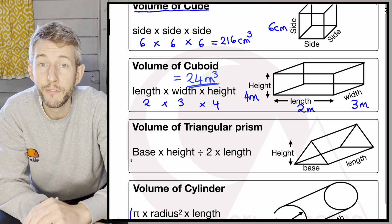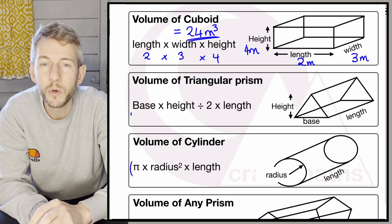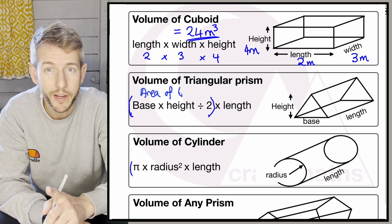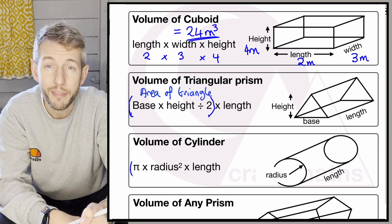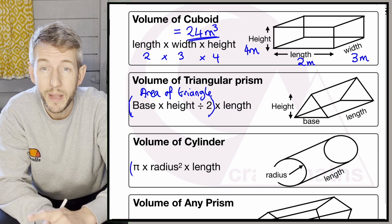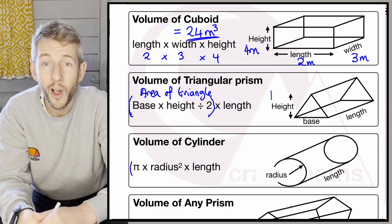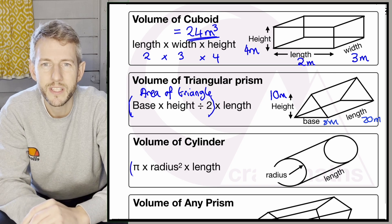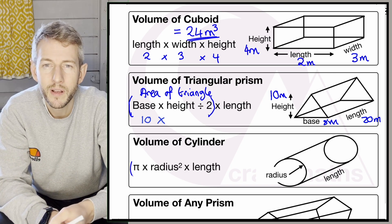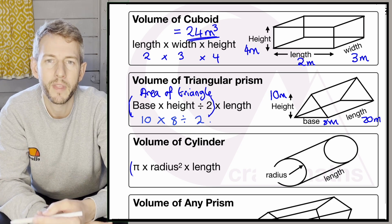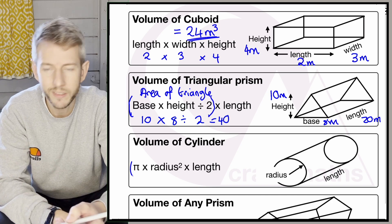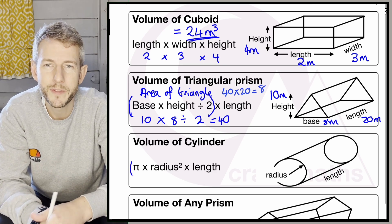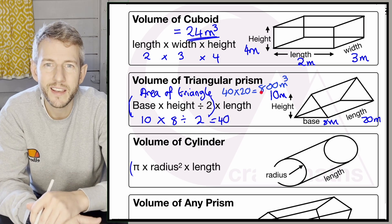Now let's look at the volume of a triangular prism. The formula is base times height divided by 2 — which gives the area of the triangle — times the length. So with a height of 10 metres, base of 8 metres, and length of 20 metres: 10 times 8 is 80, divided by 2 is 40, and 40 times 20 gives us 800 metres cubed.